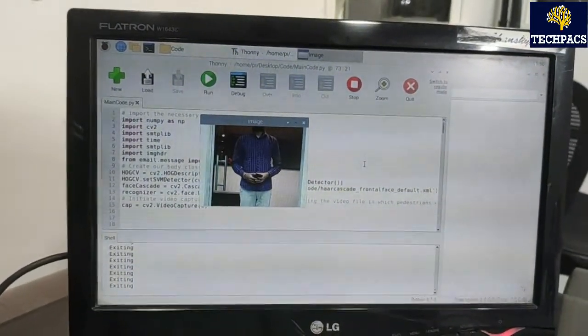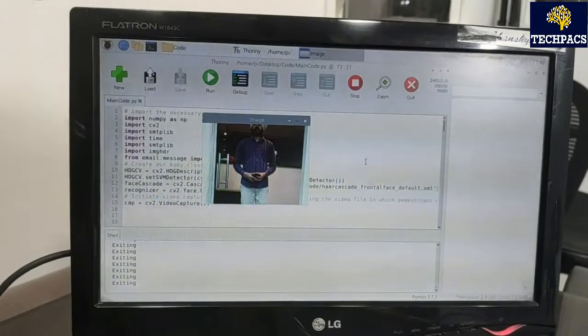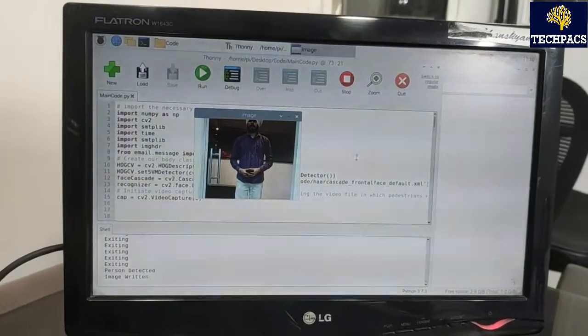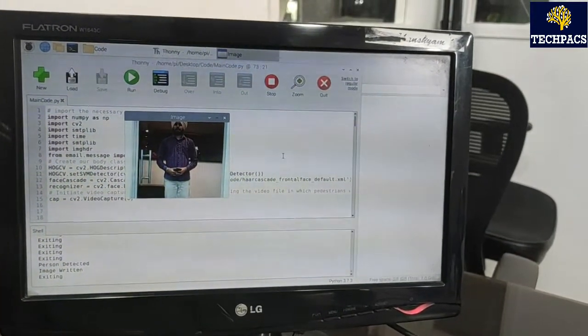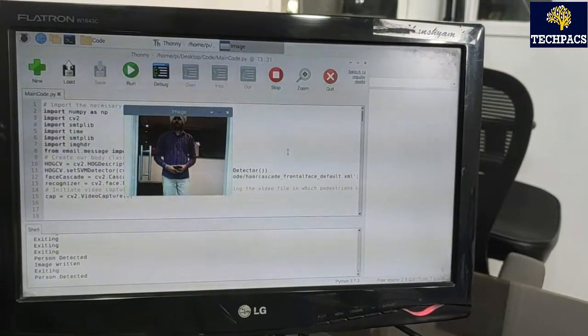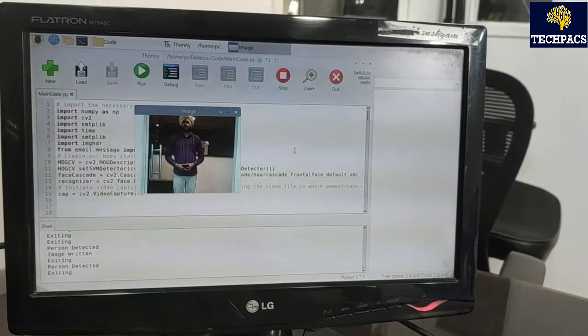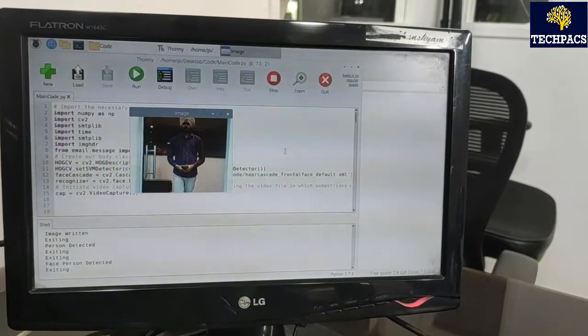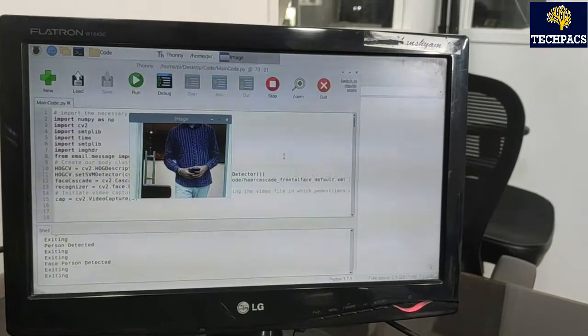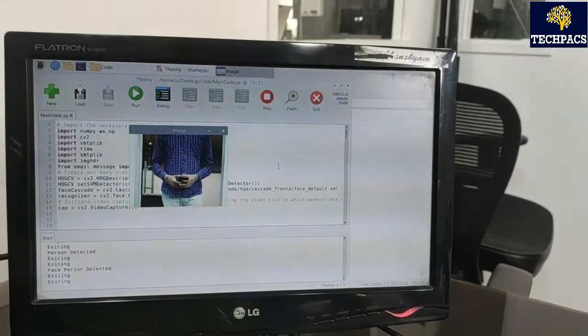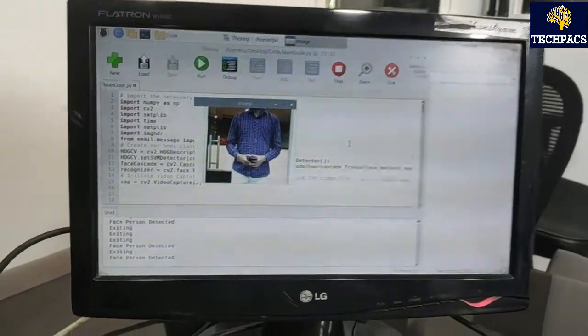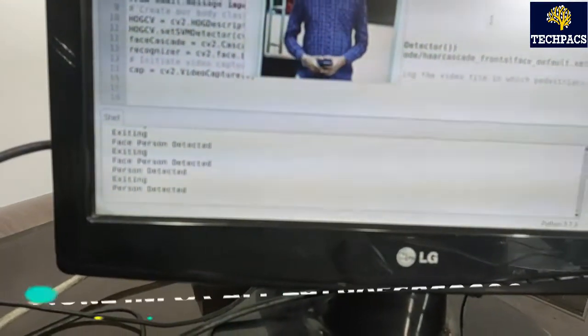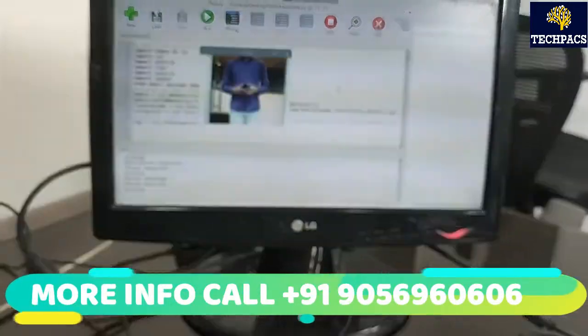As you can see, half of the body was there so it was not able to detect. When the face is there, it is detected and the image is written. The whole person was there. Once he comes toward the camera, it will detect the face.